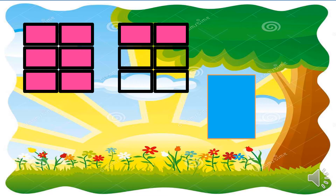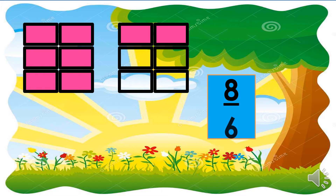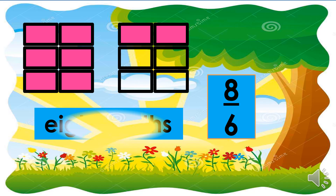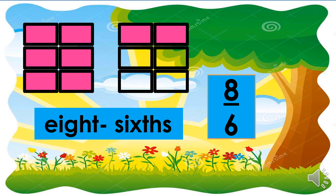Next, there are eight shaded parts in these two rectangles, so eight should be written as the numerator. And each is divided into six equal parts, so six is the denominator. The fraction symbol for this is eight-sixths. Here is the fraction word: eight-sixths.